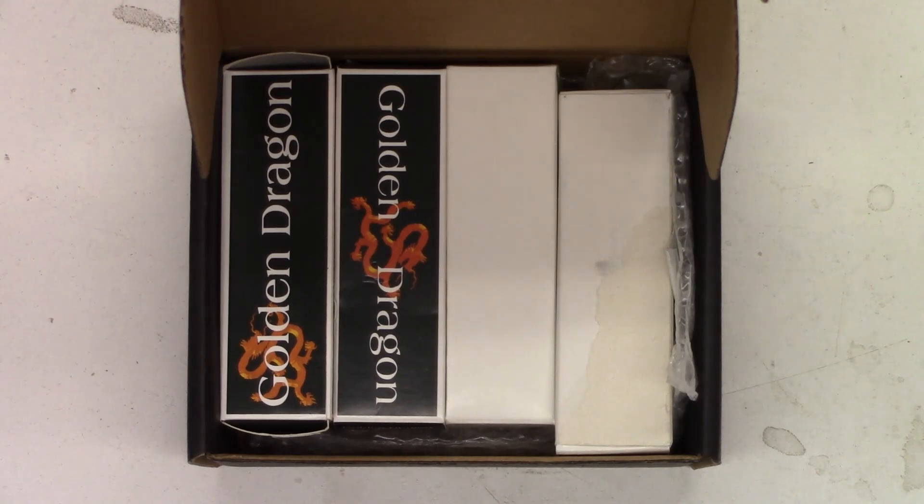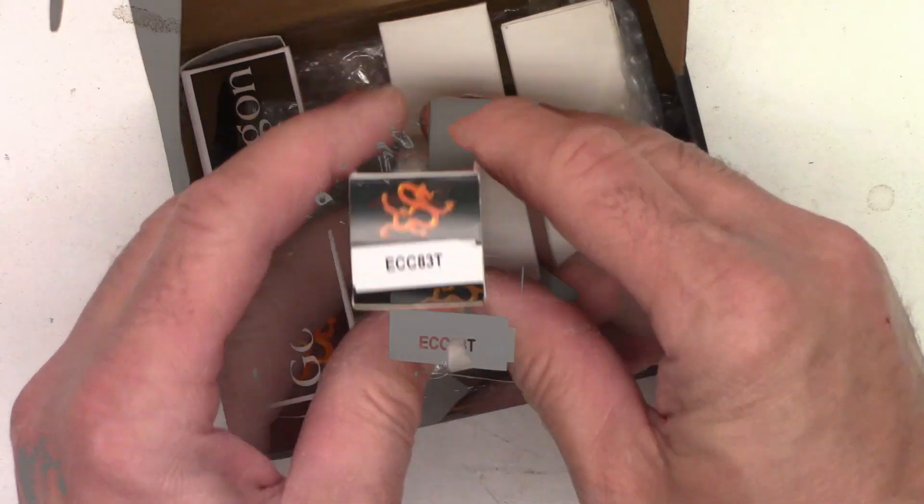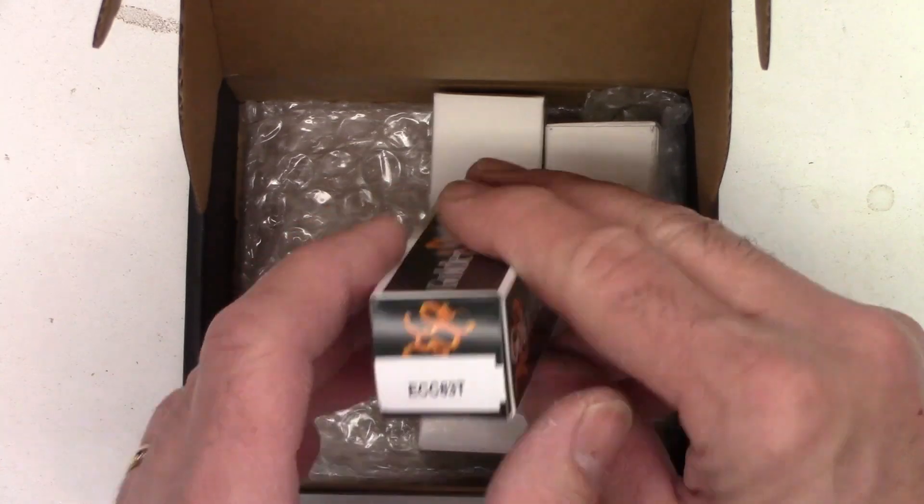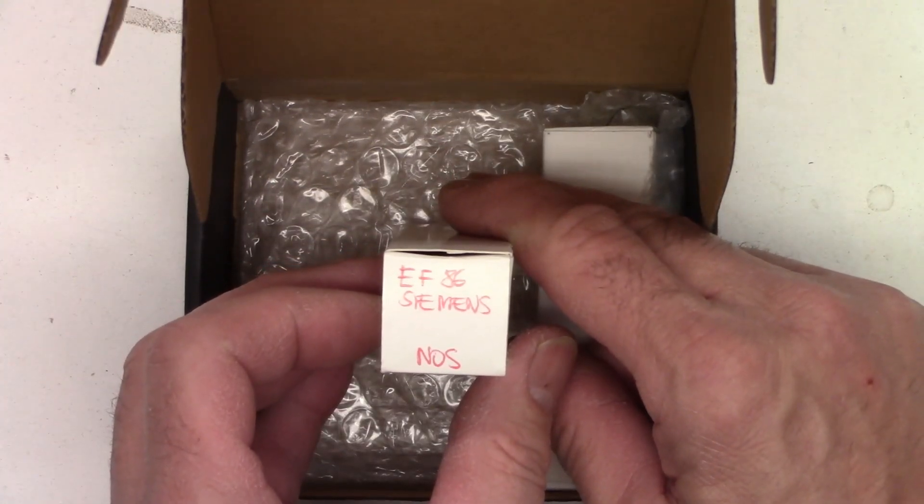So I also have a box of other tubes. Golden Dragon. And then two white boxes. The Golden Dragon we have ECC83T. Another ECC83T. Another ECC83T. And an EF86 Siemens new old stock.